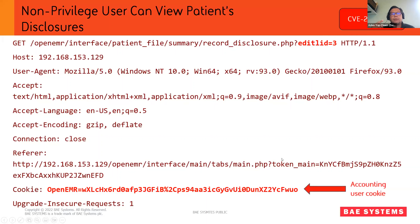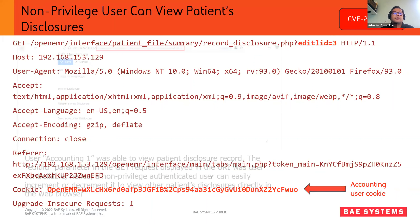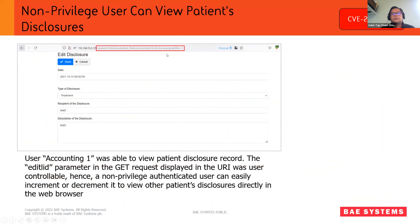The cookie highlighted in red is the accountant user cookie — by right, they should not be able to access that endpoint using this cookie. It's as simple as just knowing which endpoint to browse to in your browser and you will be able to view the patient record. Without using Burp, if you just open your browser, log in as accountant one — which is a low-privileged user — and you know the endpoint pointing to the medical record, just plug it in, change the edit_lid parameter, increment it by one, and you will be able to see other patients' records, which you should not. This is a typical classic IDOR case and not very difficult to discover.